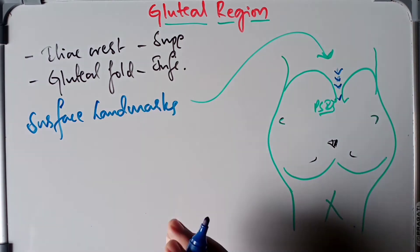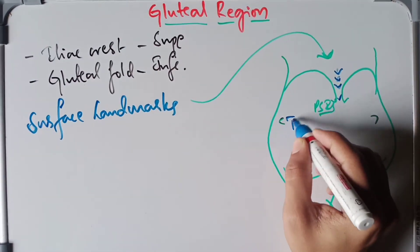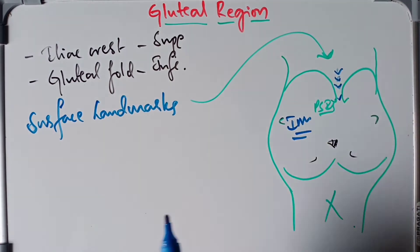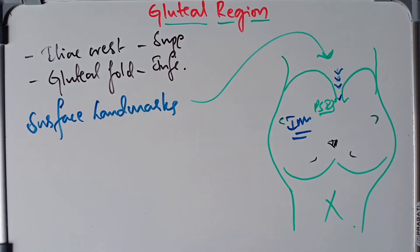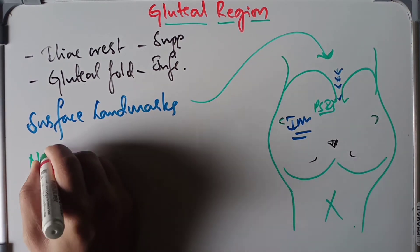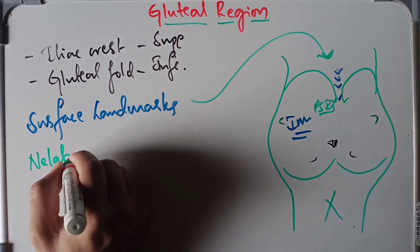The gluteal region is also one of the most common sites of intramuscular injection, which is why it is important to learn and understand the anatomy of the gluteal region.